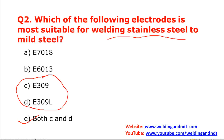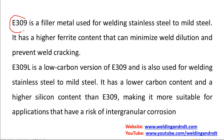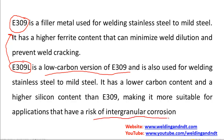The difference between E309 and E309L is the composition of carbon — the percentage of carbon. In E309L, the carbon content will be less as compared to E309. This is the only difference: the carbon content is low — it's a low carbon version of E309. The benefit of using E309L is that intergranular corrosion can be avoided. So if there is a risk of intergranular corrosion, you should use E309L.